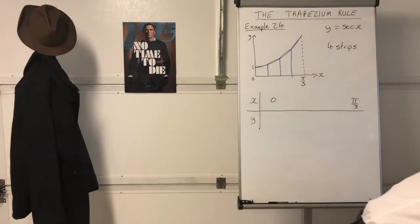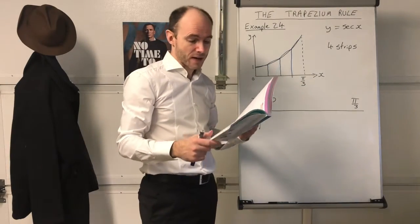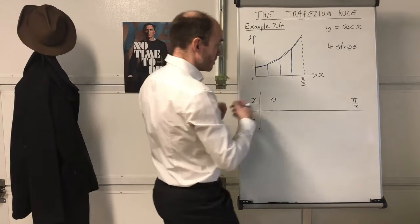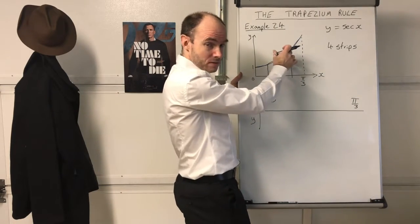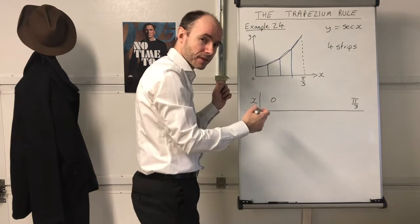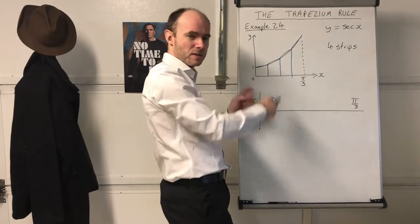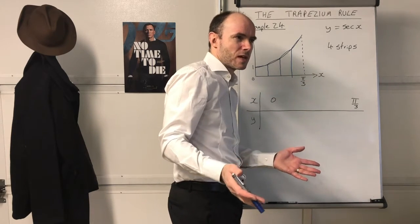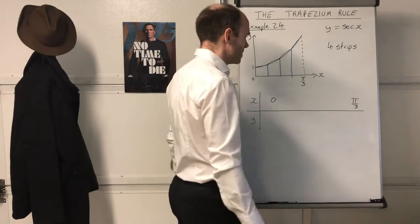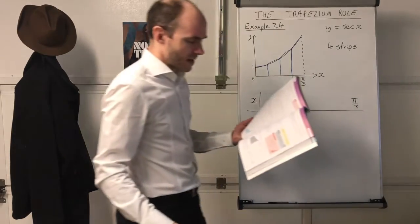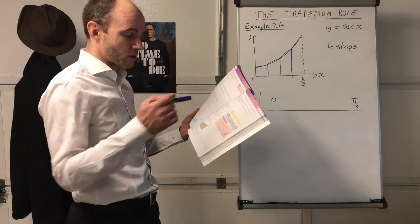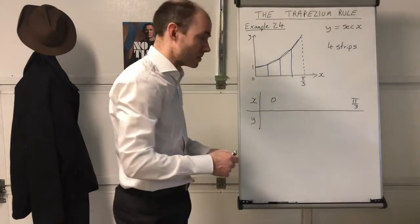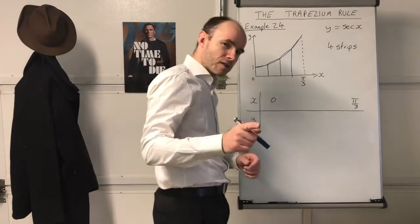Part C asks: explain whether your estimate will be an underestimate or an overestimate. You can see it's going to be an overestimate, because when you draw the trapezium correctly, it goes above the actual curve. In your answer you say each of the trapezia are above the curve. Some mark schemes say 'convex' or 'concave', but the correct phrasing here is that the graph is convex and the two endpoints of each trapezium lie above the curve. The answer is an overestimate.